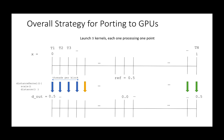Once the kernel is launched, each thread will compute the scale and distance operations on its own grid point and store it on the GPU memory as an element of the d_out array.